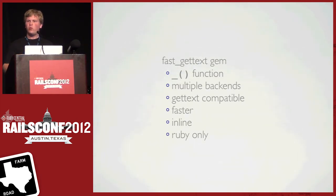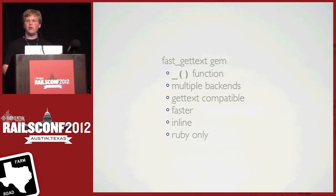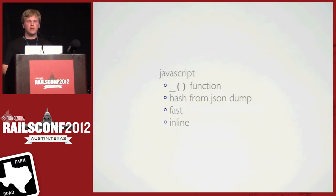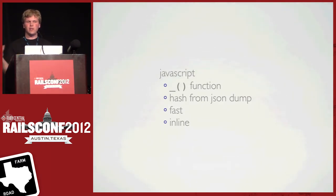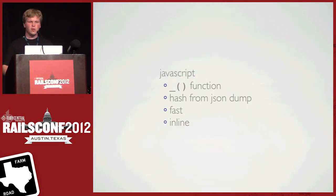On the more technical side — what do we use instead of the I18N gem? We found that using fast gettext is better than gettext, obviously faster. It still provides multiple backends — in our case, a JSON backend. It's faster, it's inline, but it is Ruby only. So we have to do a bunch of other interesting things to make this work in other languages, with fast gettext being just the one for Ruby. Fast gettext provides the underscore function instead of the T function, and we ported that to JavaScript. The JavaScript one just looks up in a hash of JSON — a hash lookup for each English phrase.